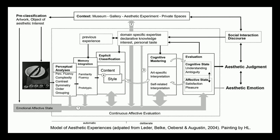Here's a diagram of Leder's model showing the variety of factors that contribute to an aesthetic judgement and experience. Most of the work in computational aesthetics has focused on the perceptual analysis of objects, but previous experience, context and affective state of the viewer also play important roles. Leder's work seems to suggest that any unified measure of human aesthetic evaluation would be impossible.